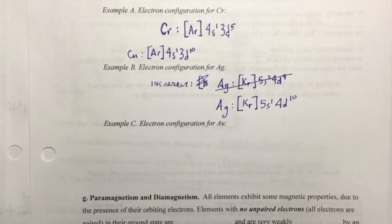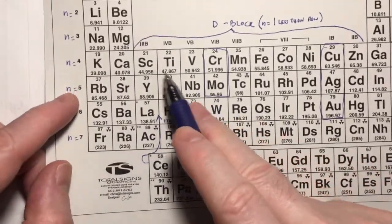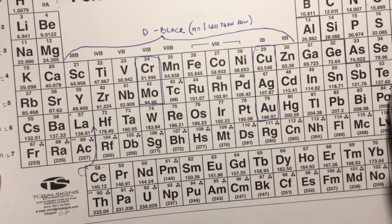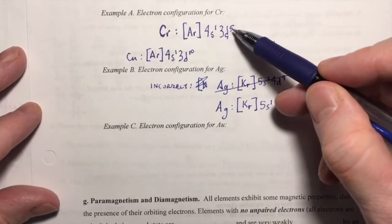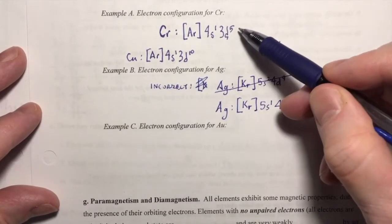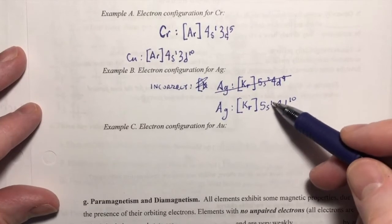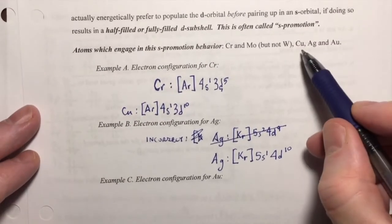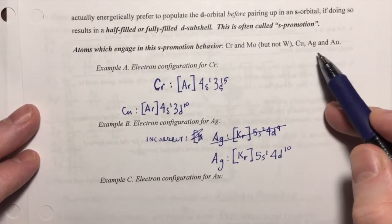The easy way to do this for these five elements is to figure out what their electron configuration would normally be by looking at the periodic table, and then recognize when you have an S2D4 situation where you can promote an electron over, or an S2D9 situation where you can promote that electron over. And which elements does it happen with? Chromium, molybdenum, copper, silver, and gold.